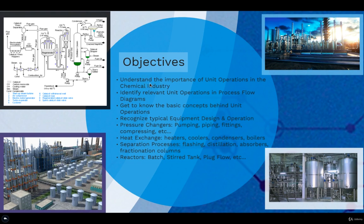First, the overall idea is to understand the importance of unit operations in the chemical industry. Why do we use them? Why do we assign them? Why do we choose to separate them? And what are the important aspects of this?